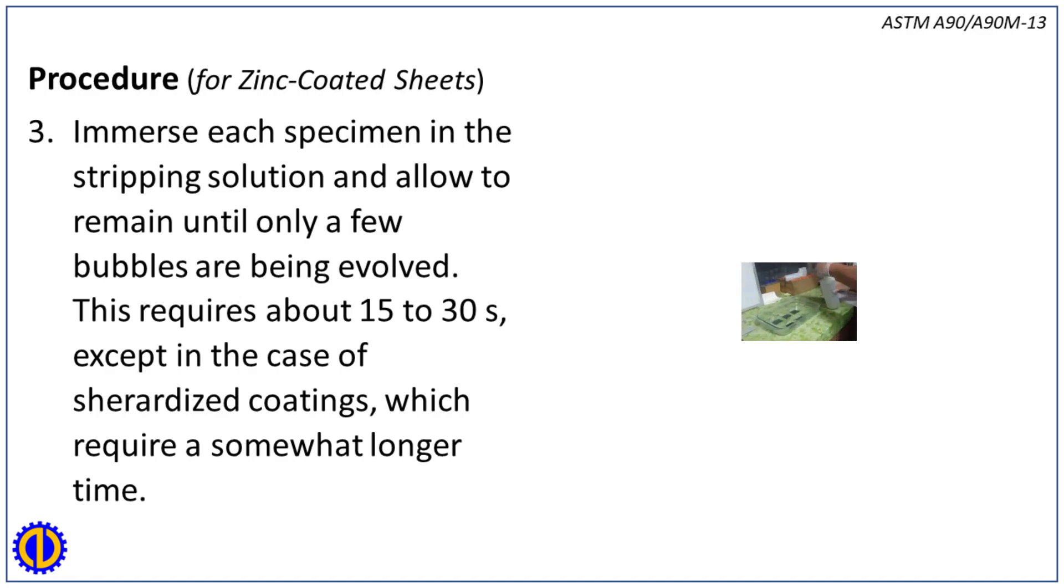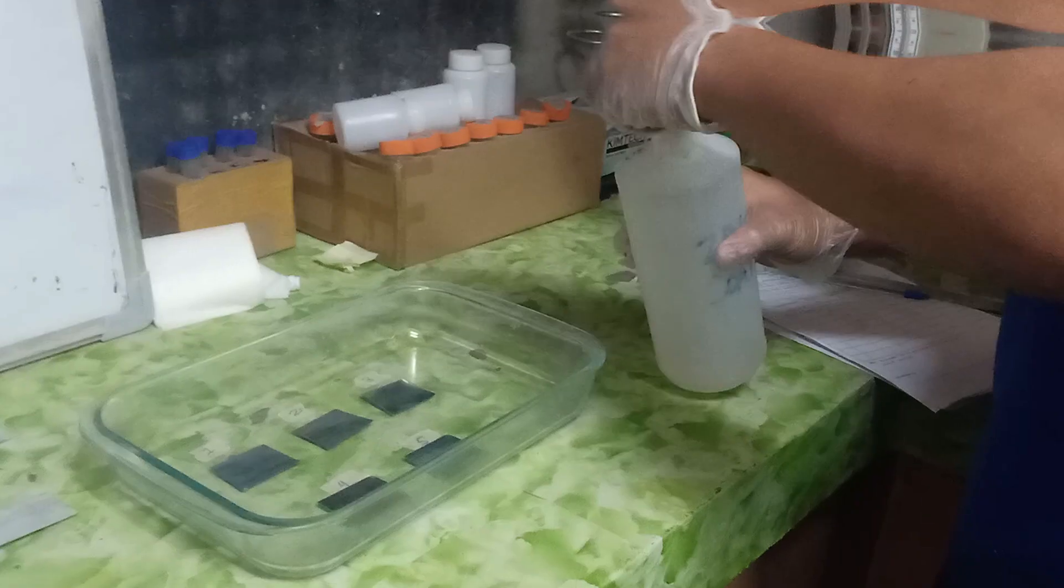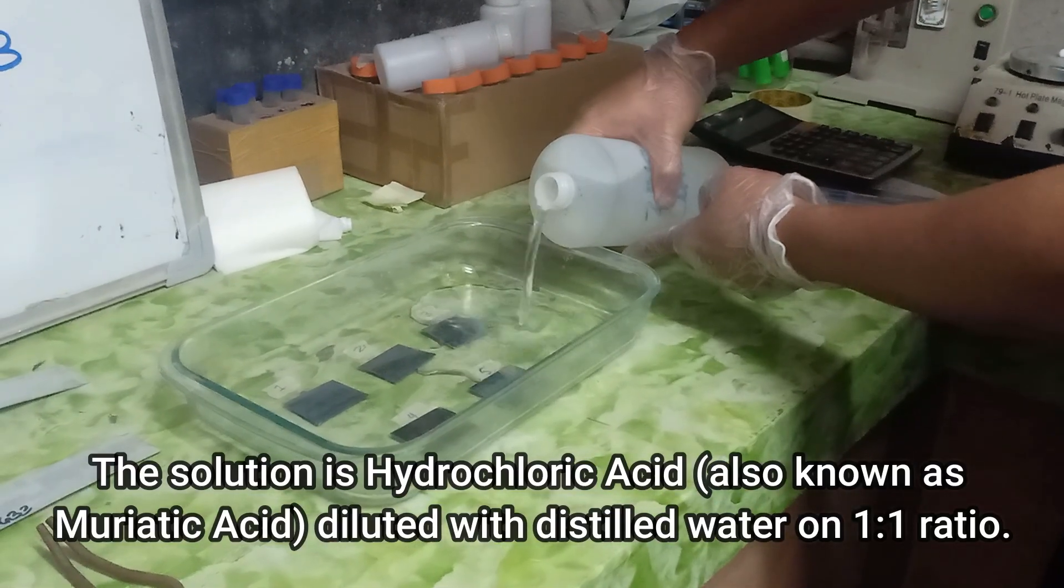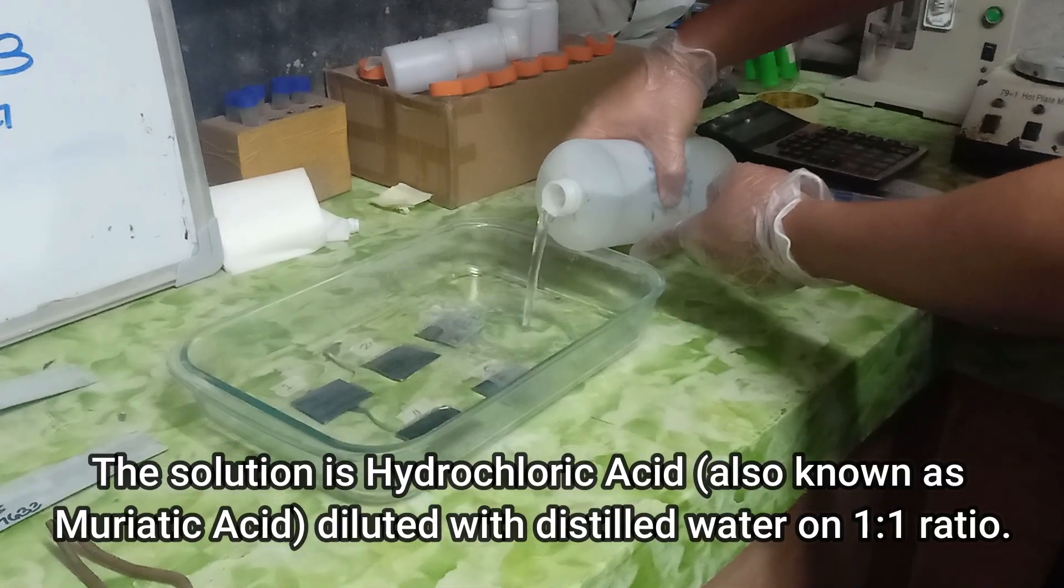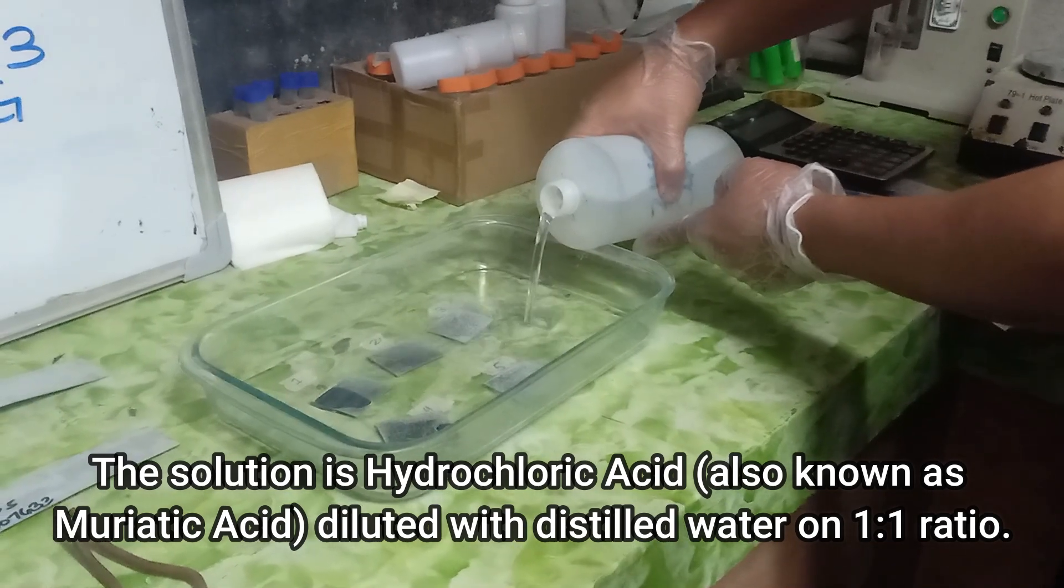Step 3: Immerse each specimen in the stripping solution and allow to remain until only a few bubbles are being evolved. This requires about 15 to 30 seconds except in the case of sherardized coatings which require a somewhat longer time. The solution is hydrochloric acid (also known as muriatic acid) diluted with distilled water on 1:1 ratio.